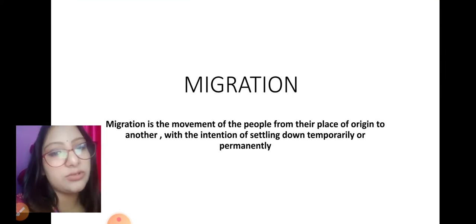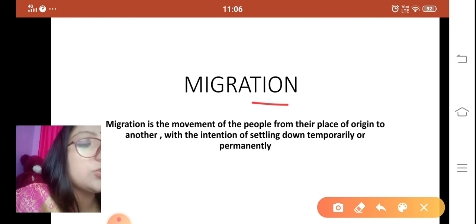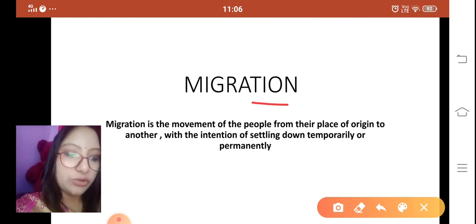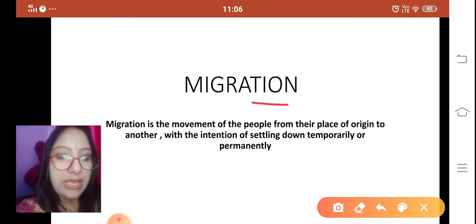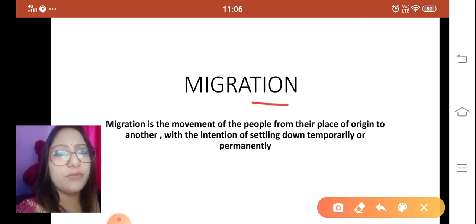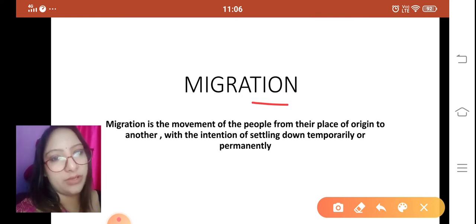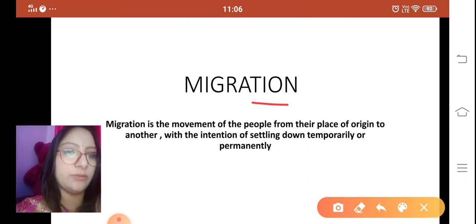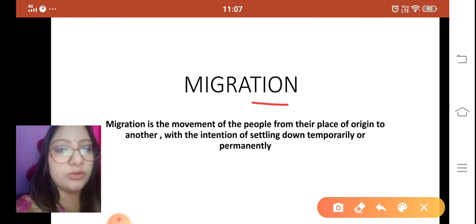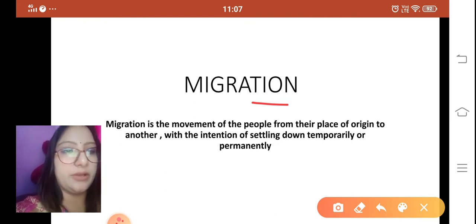One important thing to understand: migration is not at all a new phenomenon. Migration has occurred throughout human history. The earliest known human migration occurred when early humans moved out of Africa millions of years ago. Since then, we have witnessed several human migrations, sometimes on a large scale, sometimes smaller, but there is evidence of the movement of people since time immemorial.